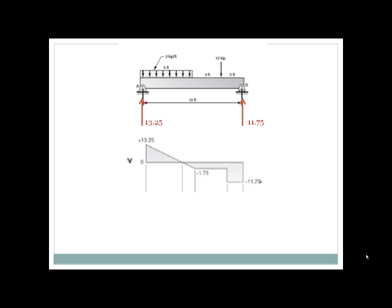It remains there until you hit the ten kip load which pushes it down to negative eleven point seven five kips, and then the right hand reaction brings it back up. Now because the shear diagram crosses zero at some point that we don't know, we'll have to calculate that.